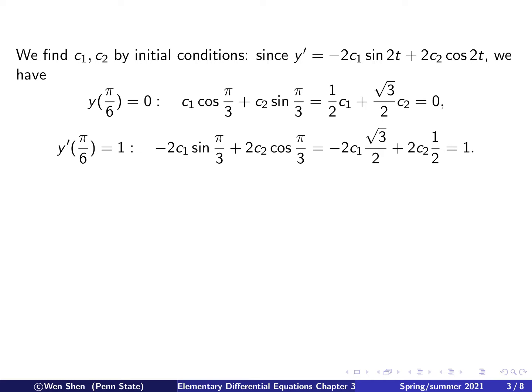The second equation is obtained from y'(π/6) = 1. Setting 2t = π/3 in the expression for y prime, we get sin(π/3) = √3/2 and cos(π/3) = 1/2, giving us a second linear equation. We now have two unknowns c1 and c2, and two linear equations to solve.